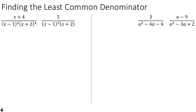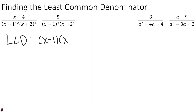When adding fractions that involve variables, the most important and sometimes most difficult step is identifying the least common denominator between the two fractions. We follow the same process as with numeric fractions — identify the factors of each denominator and figure out how many of each we need. In this first example, we see (x minus 1)'s and (x plus 2)'s in the denominators of both fractions, so our LCD will be composed of those factors.